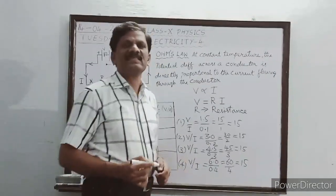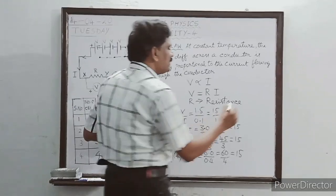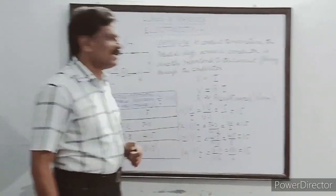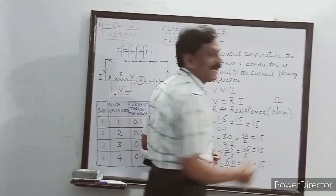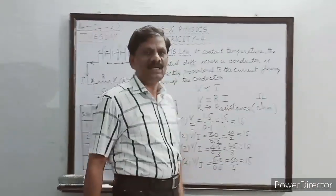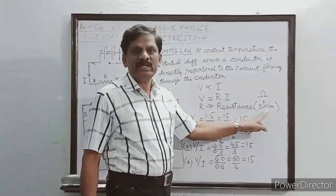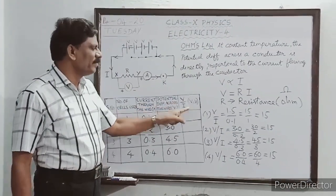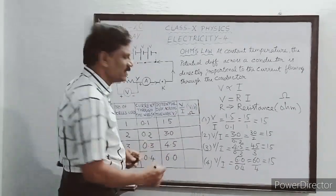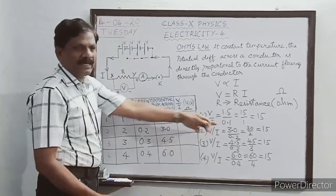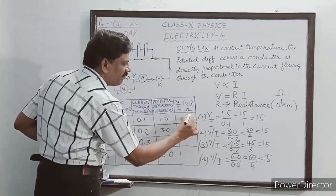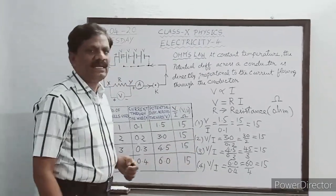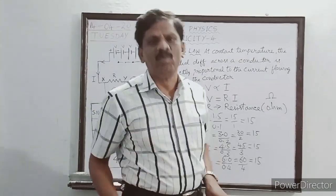The electrical resistance of the conductor has a unit called ohm, represented by the symbol Ω. In the last column of our observation table, the unit of V by I is ohm. All four values of resistance calculated are 15 ohm. So we have verified Ohm's law, which states that the V by I ratio is always a constant, provided the temperature is constant.